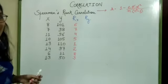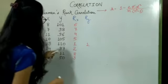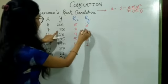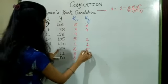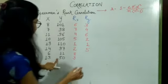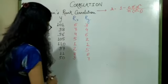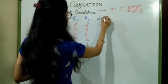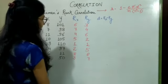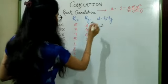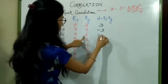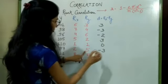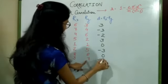The largest y value is 110 — give it rank 1. Then 105 — rank 2. 101 — rank 3. 98 — rank 4. 97 — rank 5. 96 — rank 6. And 57 and 11 will be given rank 8. Variable D is Rx minus Ry: 6−3=3, 7−4=3, 4−6=−2, 5−2=3, 1−1=0, 2−5=−3, 8−8=0, 3−7=−4. This method is easy — just give ranks to the variables and find the difference in their ranks.